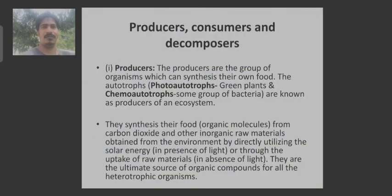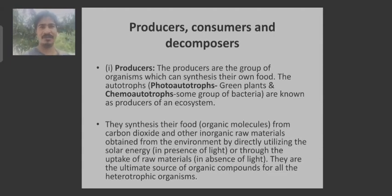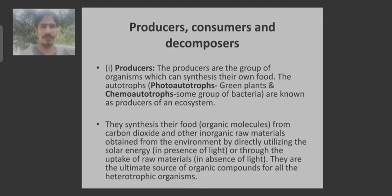Now, we have been discussing about the terms producer, consumer, and decomposer throughout the forest ecosystem and pond ecosystem. Producers, in very simple language, are organisms which can prepare their own food. For example, green plants and some bacteria.